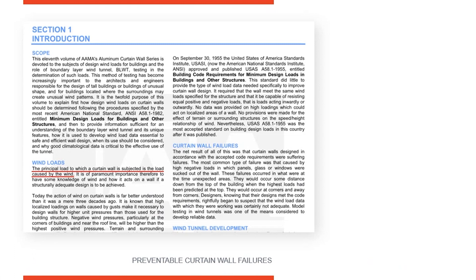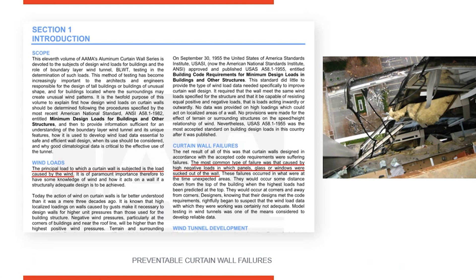On the right side under 'Curtain Wall Failures,' AAMA states: the most common type of failure was caused by high negative loads, in which panels, glass, or windows were sucked off of the wall. As shown in this picture, the elevation was not blown inward — most people assume wind pressure is positive, hitting directly on the facade. But the greatest wind pressure is actually negative, on the backside as wind passes around a building's corners. The frames were pulled off, not blown in, because the anchoring system underestimated the negative load.